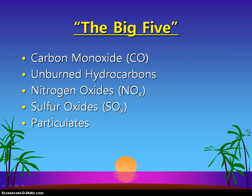As we go through this unit, we're going to be looking at the Big Five as far as the types of pollutants that can get into our atmosphere. These are: carbon monoxide, carbon dioxide, hydrocarbons, nitrogen and sulfur oxides, and particulates.